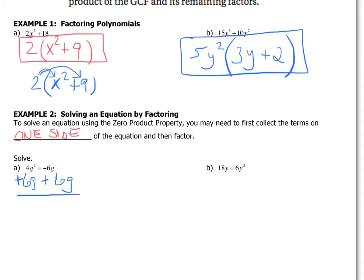So by doing this, remember like terms, I can't add g² and g's. But now on the right hand side I get zero. Because the negative 6g plus 6g is zero.